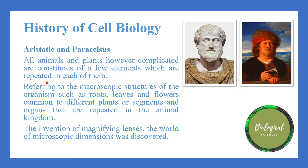They referred to the macroscopic structure of organisms. Macroscopic structures are those which can be seen through the naked eye — such as roots, leaves, and flowers in plants, or segments and organs that are repeated in the animal kingdom. After the invention of the magnifying glass and magnifying lenses, microscopic structures could also be studied; before that, only macroscopic structures were examined.